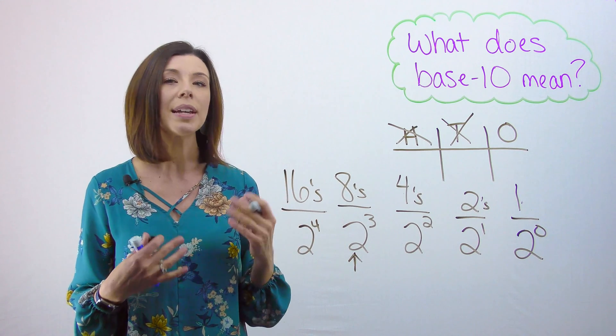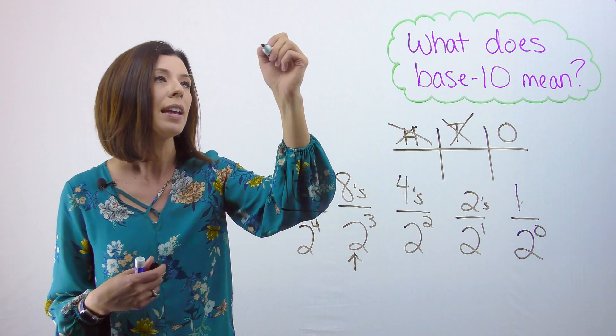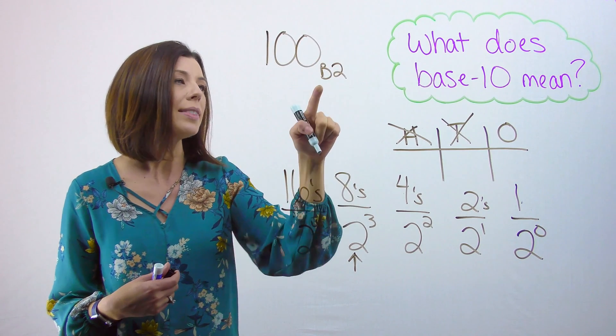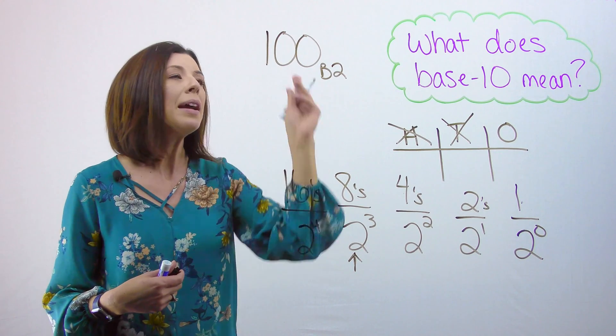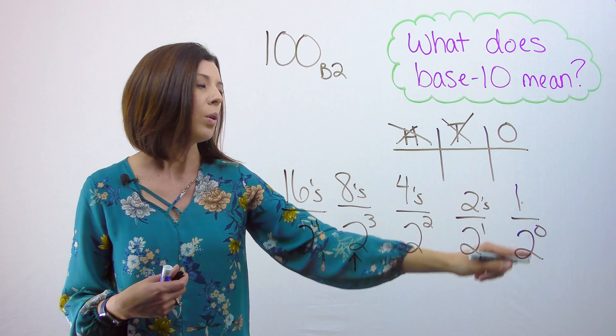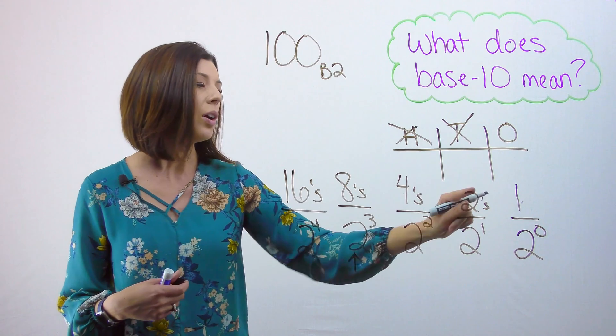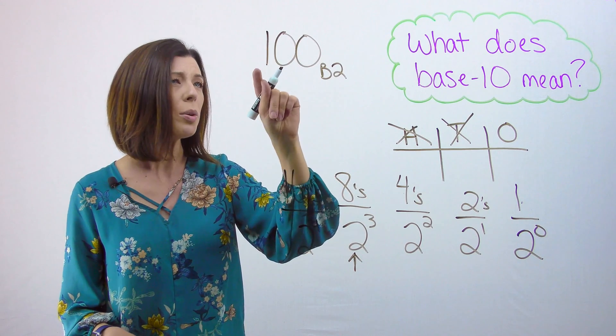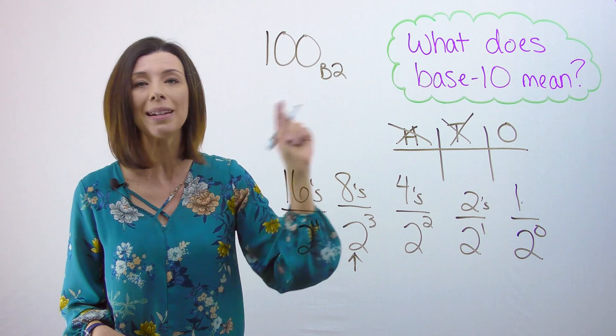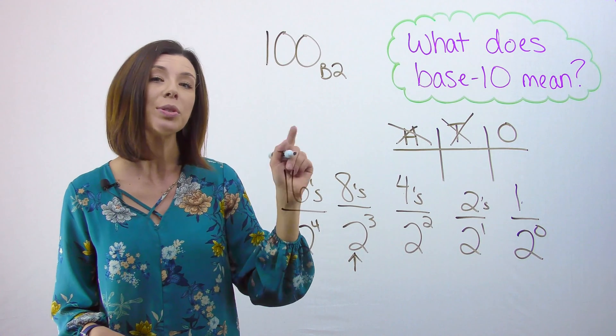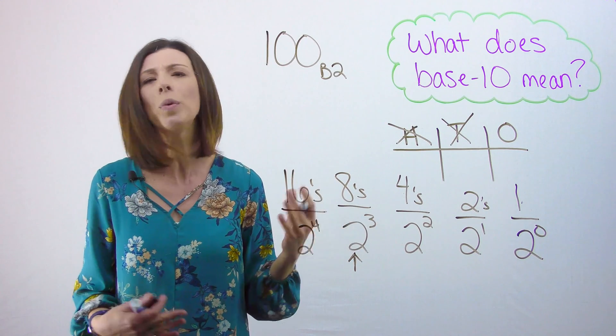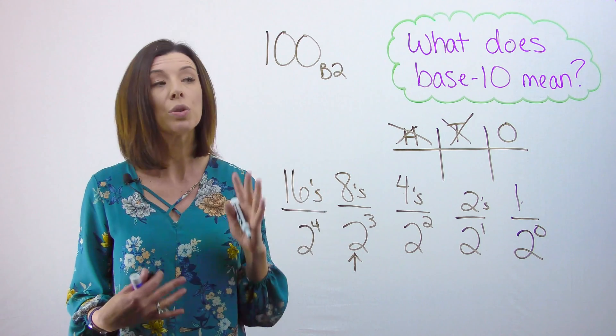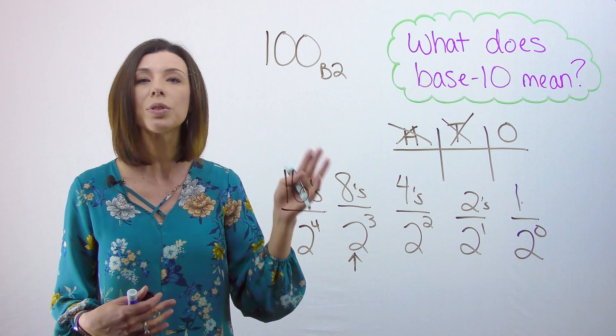Likewise, when I read numbers in other bases, for instance, if I have this number, and when I write numbers in other bases, I write this little B2 down here. This tells me that I have 0 1s. I have 0 2s, but I have 1 4. So I don't read this as 100 base-2. I read it as 100 base-2. Again, remember, we don't have hundreds anymore in base-2. So it wouldn't make sense for me to call this a 100. So what we do is we just say 100 base-2.